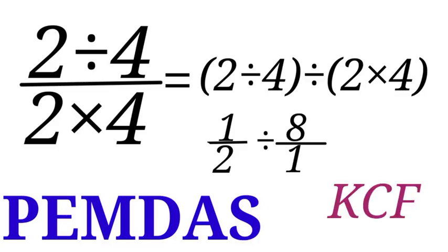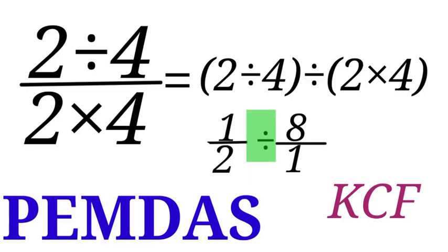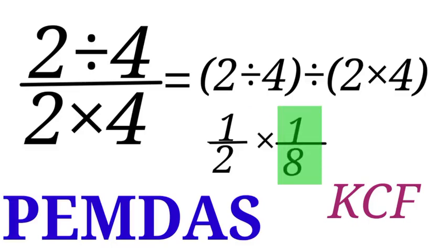Because of this division sign, we are going to use KCF: K means keep, C means change, and F means flip. For 1 over 2 we keep it, for the division sign we change it to multiplication, and for 8 over 1 we flip it to get 1 over 8. Our problem is now 1 over 2 times 1 over 8.